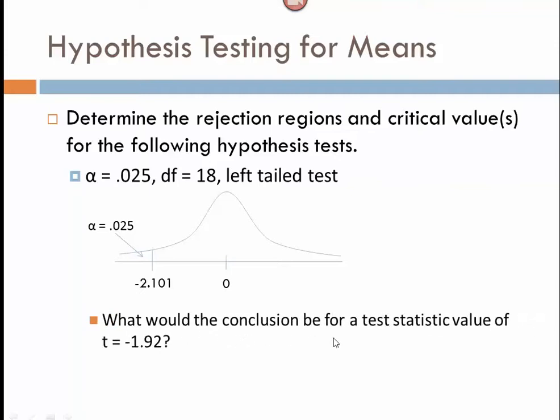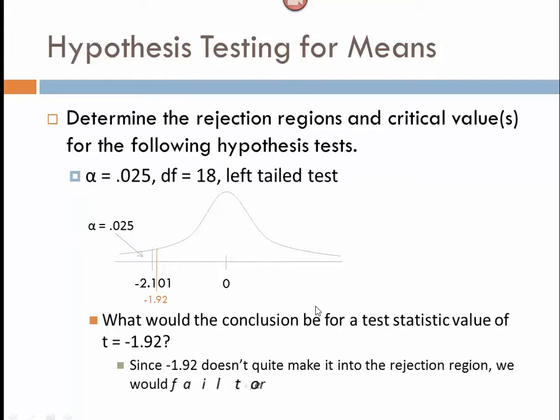What would the conclusion be, then, if your test statistic had a value of negative 1.92? Well, negative 1.92 is right about there. It doesn't quite make it into the rejection region. And so, in this case, we would fail to reject the null hypothesis, whatever it is. Remember that the critical value represents the tipping point between where we determine sample results to be extreme, or if they're closer to zero there, we consider them to be not extreme enough. In this case, we got really close, but our sample value just wasn't extreme enough for us to reject the null hypothesis.